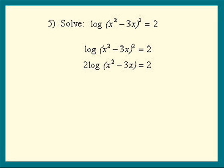Let's pull the power 2 out in front of the log. Now we see the 2's on both sides. So let's divide both sides by 2. That gives us log of x squared minus 3x equals 1.